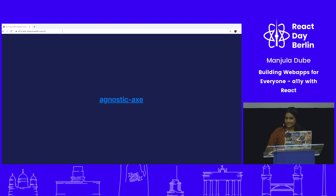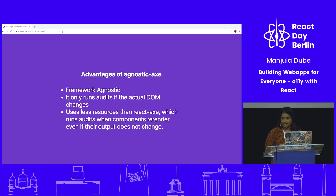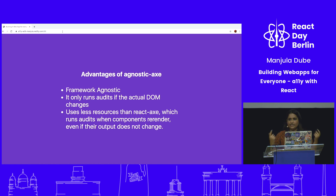Next is Agnostic Axe, built by one of my co-workers at N26. It's similar to React Axe but with advantages: it's framework-agnostic — it works with Angular, Ember, or whatever you want. It also only runs the audit when the DOM changes, not on every re-render like React Axe, so it uses fewer resources. I'd prefer using Agnostic Axe, and that's what we use at N26.